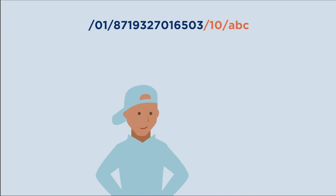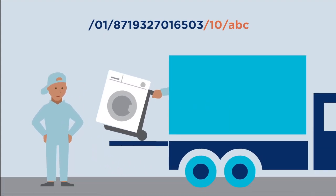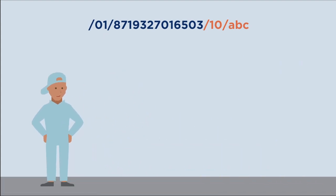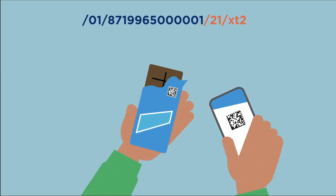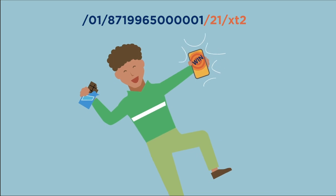By adding a batch number, you can make the information more specific. This is useful, for example, in the case of a product recall or a serial number for a special promotion. John scans his chocolate bar and sees that he's won a prize.